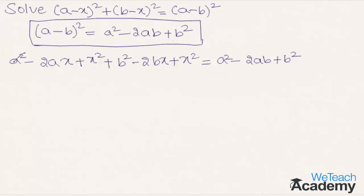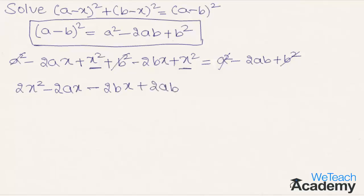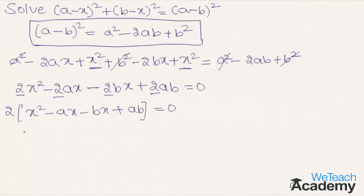Here a squared and a squared cancel on both sides, and b squared and b squared also cancel. We have two x squared terms, giving us 2x squared minus 2ax minus 2bx. Bringing minus 2ab to the left hand side it becomes plus 2ab equal to 0. Taking 2 as a common factor gives 2 into x squared minus ax minus bx plus ab equal to 0. Transferring 2 to the other side we get x squared minus ax minus bx plus ab equal to 0.